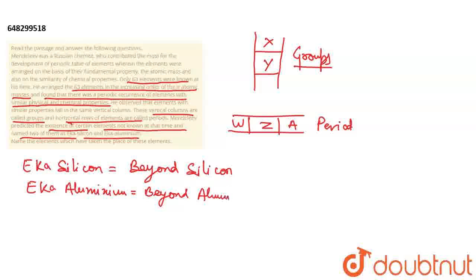Name the element which have taken the place of this element. उन्होंने Silicon के नीचे लगा दिया उस element को, Silicon के नीचे Eka Silicon और आज पता है कि Silicon के नीचे क्या आता है, periodic table में Silicon के नीचे पाया जाता है Germanium (Ge). Beyond Silicon मतलब हो जाएगा Germanium.